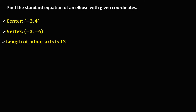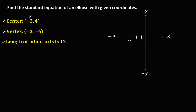First, we need to graph this ellipse. From the given coordinate of the center, x is negative 3 and y is positive 4. On the coordinate plane, we mark negative 3 on the x-axis and positive 4 on the y-axis, then connect to plot the center point.